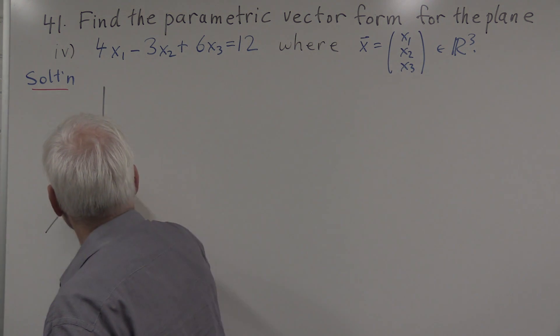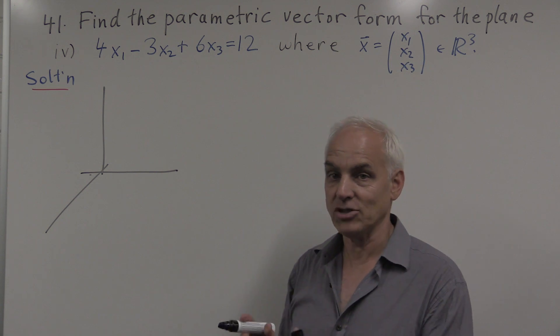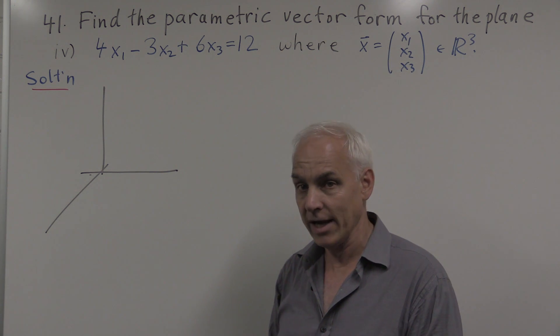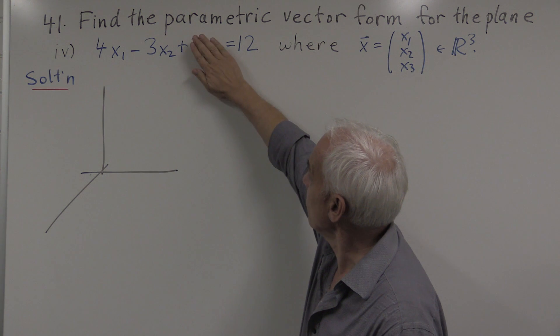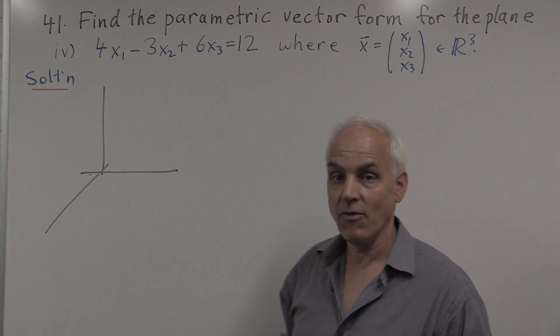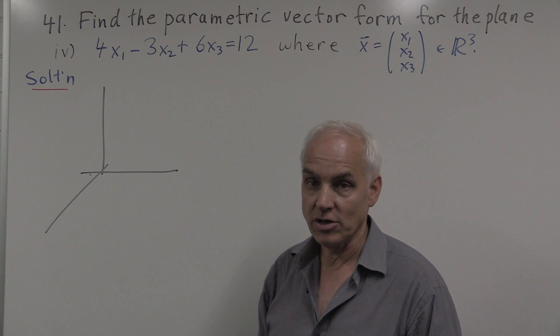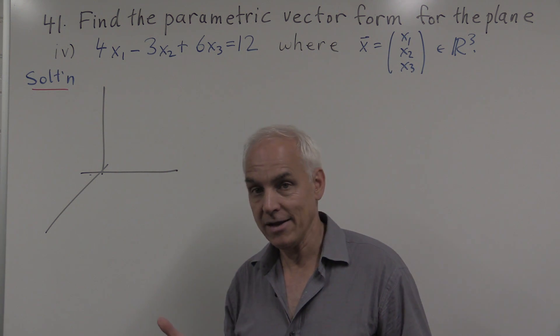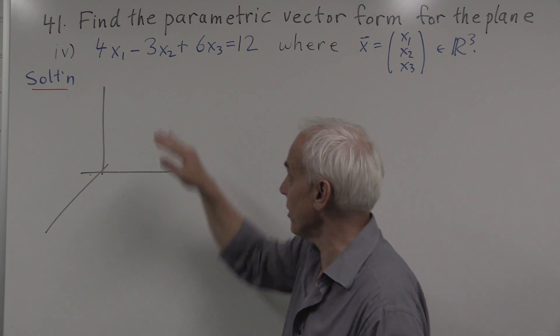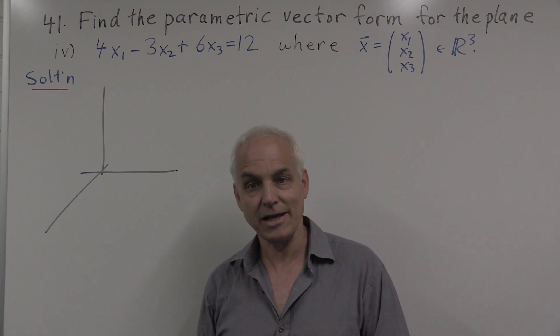So this is again a plane. It's one linear equation in x1, x2, x3 that does define a plane, just as if we removed one of these variables, an equation like 4x1 minus 3x2 equals 12 represents a line in the plane. Does this kind of equation determine a plane in three-dimensional space? It's a very basic and important ingredient in linear algebra.